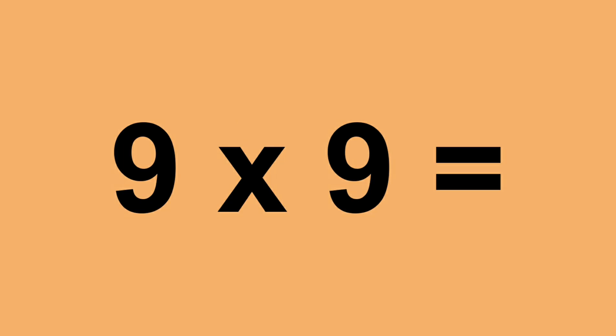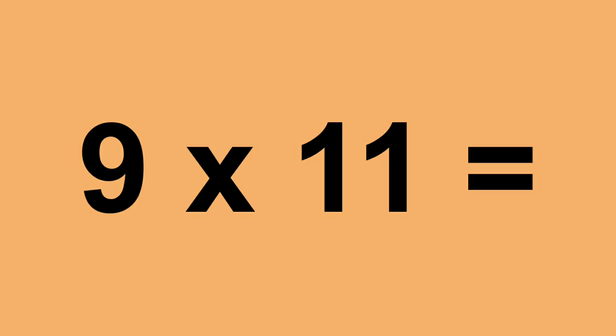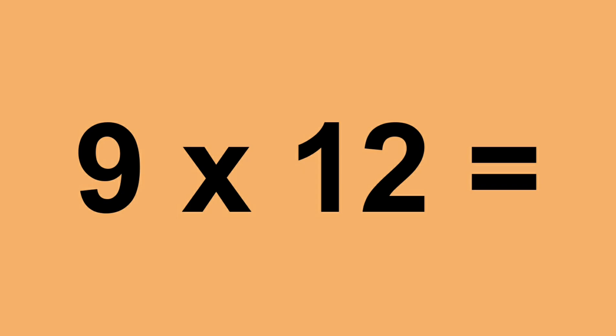Nine times nine equals eighty-one. Nine times ten equals ninety. Nine times eleven equals ninety-nine. Nine times twelve equals one hundred and eight.